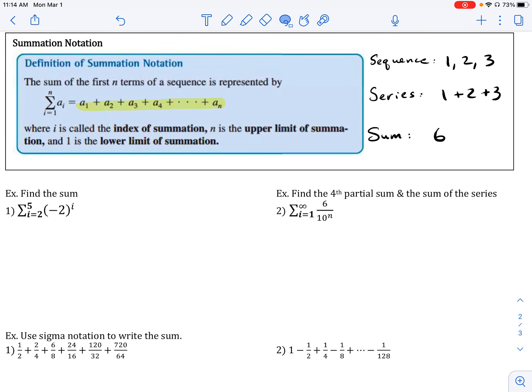A sequence is simply a collection of numbers or a list of numbers in an order. The series is when you add up the terms of that sequence. And the sum would be the value or what we would get when we add up all those terms in that series.